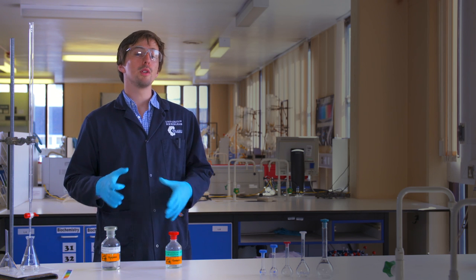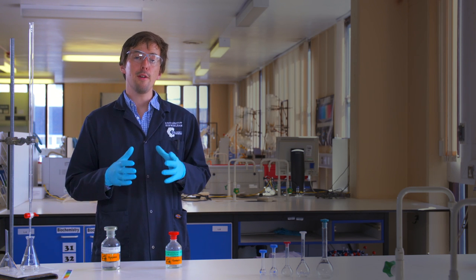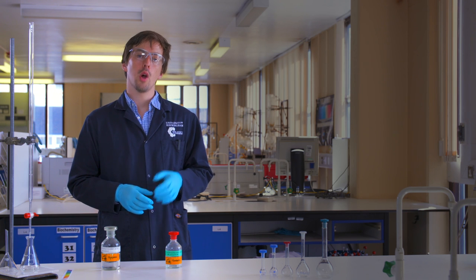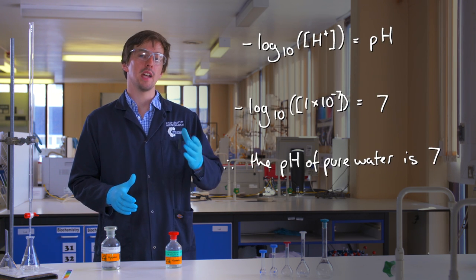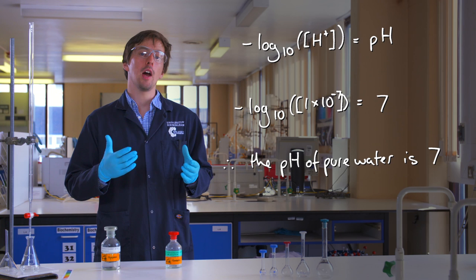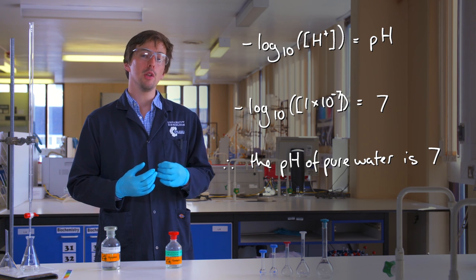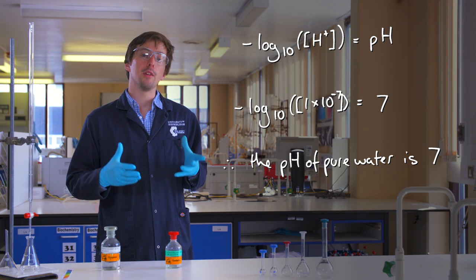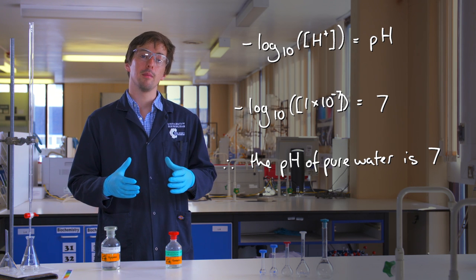In a bottle of pure water, out of every 10 million water molecules, one of those molecules will have dissociated into H+ and OH−. Using our equation we can work out that the pH of pure water is seven.